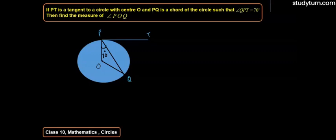We know that the radius and tangent are perpendicular at their point of contact.